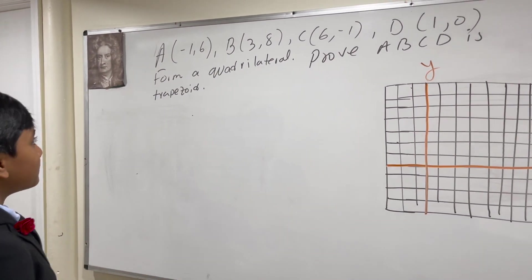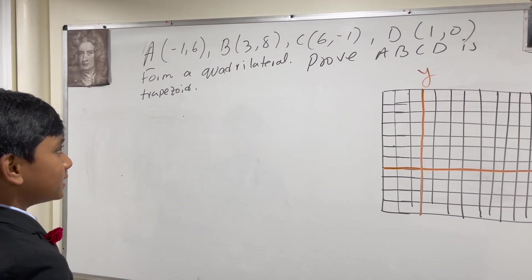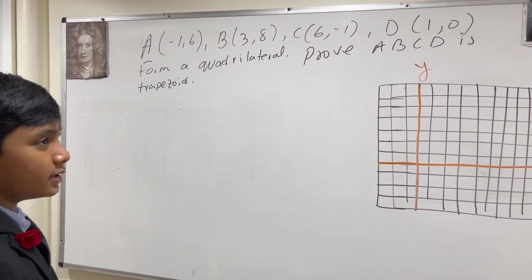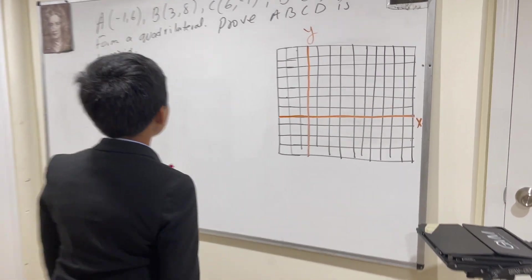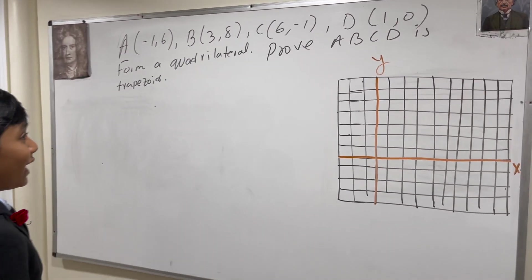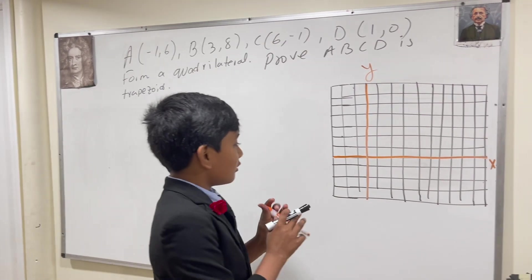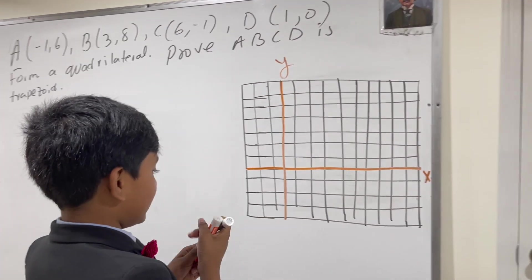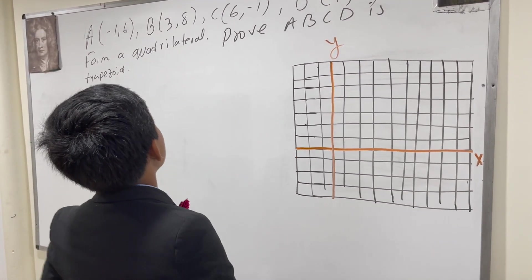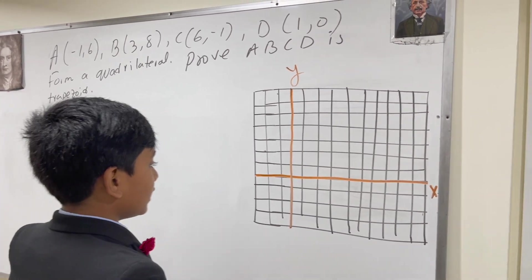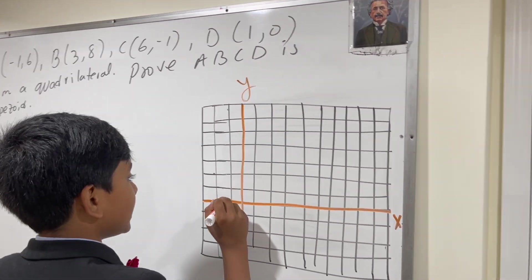A(-1,6), B(3,8), C(6,1), D(1,0). What could the numbers possibly mean? Well, form a quadrilateral. Prove ABCD is trapezoid. So what is A, B, C, and D? Well, A is negative 1, 6. So you have negative 1, 6.